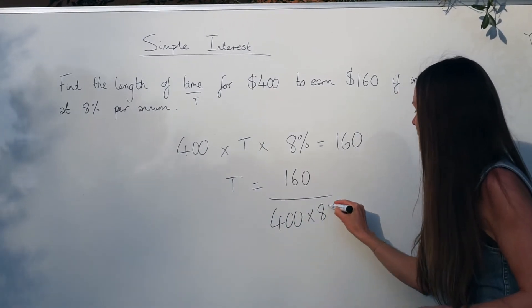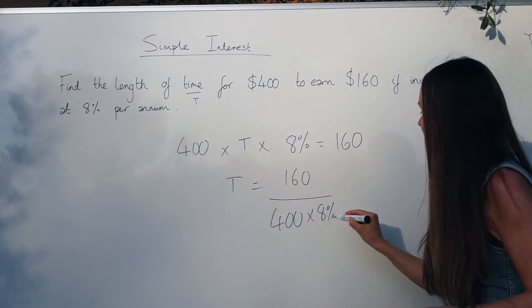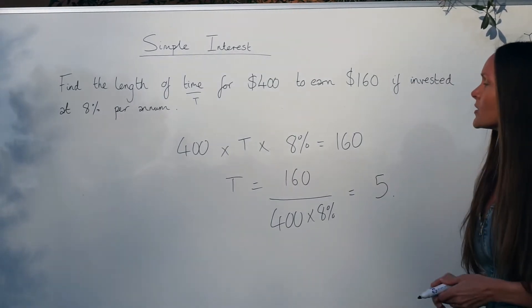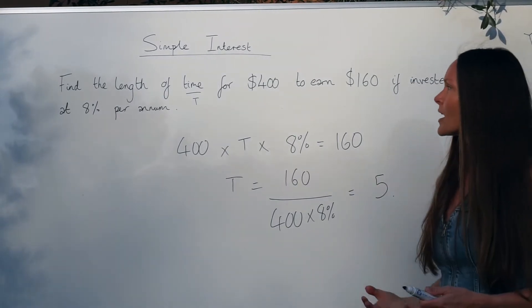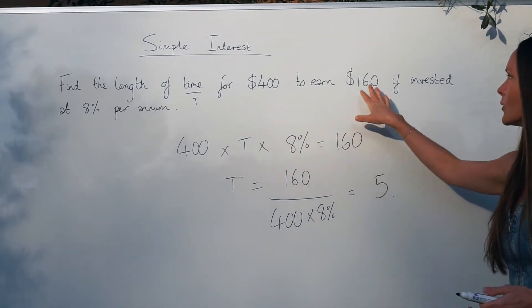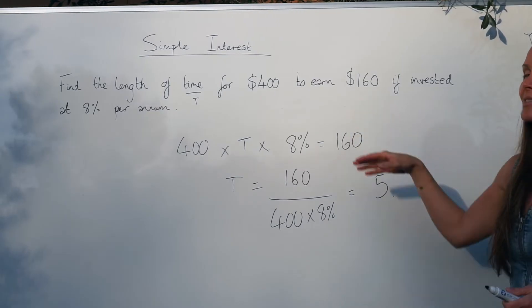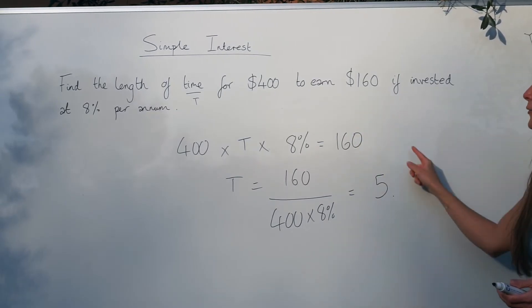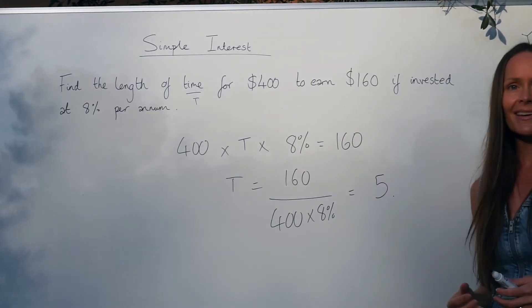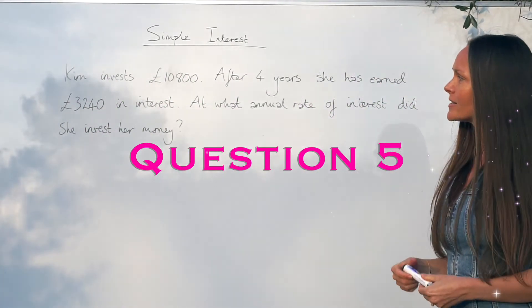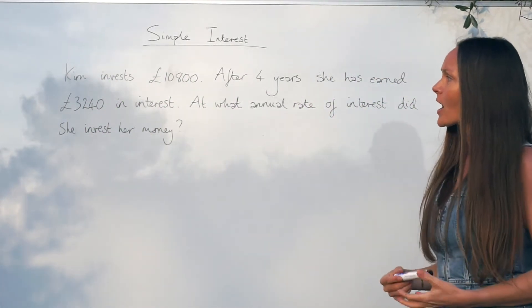To solve this equation, divide one hundred and sixty by four hundred and also by eight percent. When you put that in the calculator you should get five, so the length of time for this amount of money to earn one hundred and sixty dollars in interest is five years.